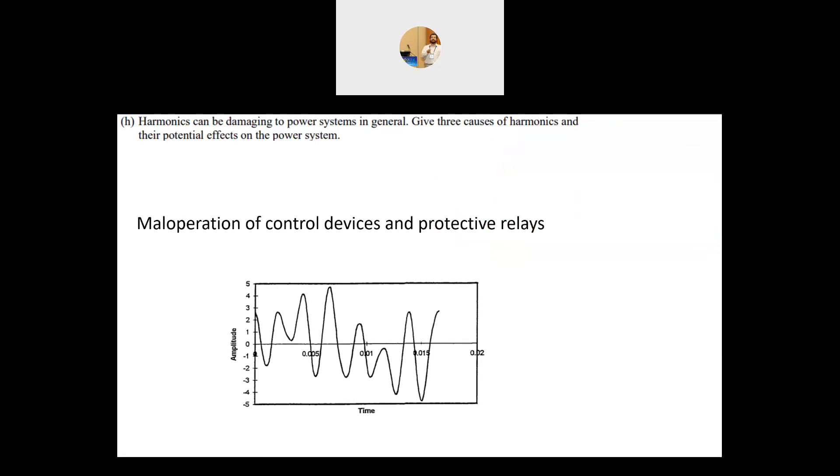How does this impact the power system? The first effect is maloperation of control devices and protection relays. This highly distorted current can have what we call multi-zero crossings. When you have such highly distorted current, it will cause maloperation of control devices or protection relays. They will misunderstand the signal and might open or close certain circuits that they're not supposed to.